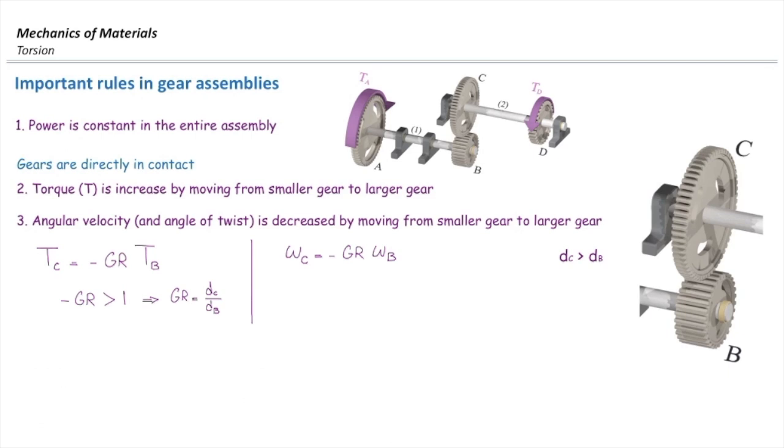Velocity in C is equal to gear ratio multiplied by velocity in B. But gear ratio here in this case is smaller than one because the velocity in the larger gear would be smaller than the velocity in the smaller gear. So gear ratio would be reverse of what we had before, DB over DC.